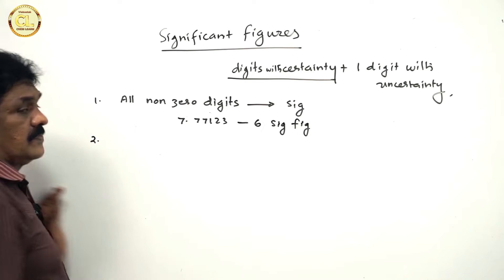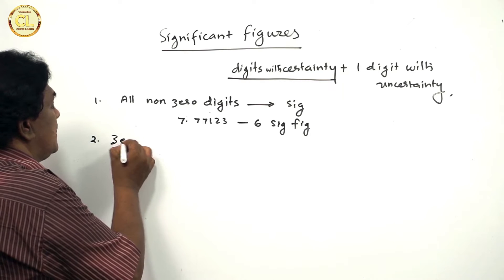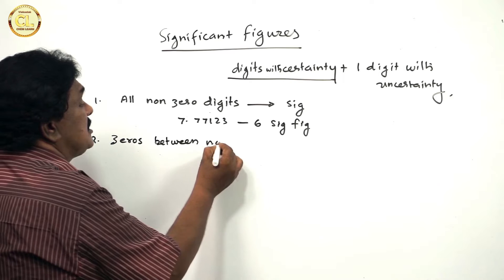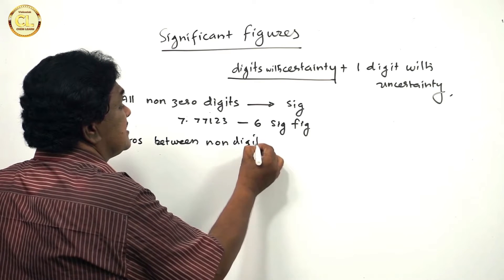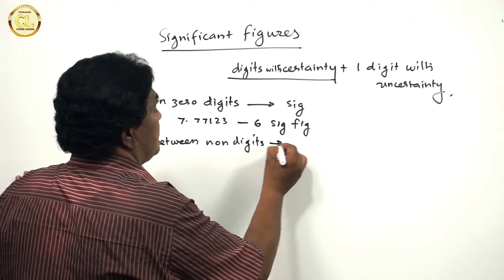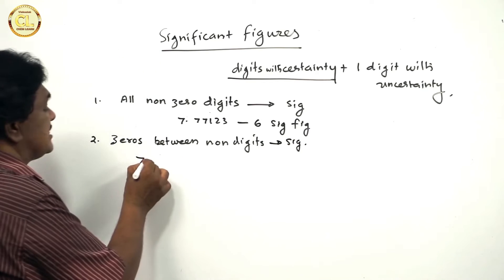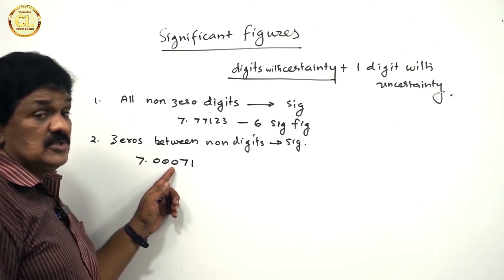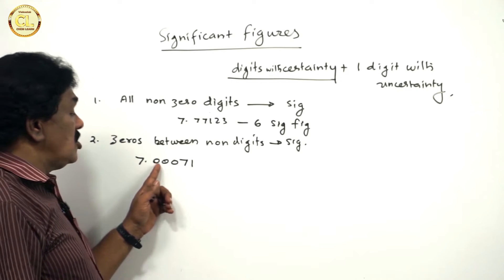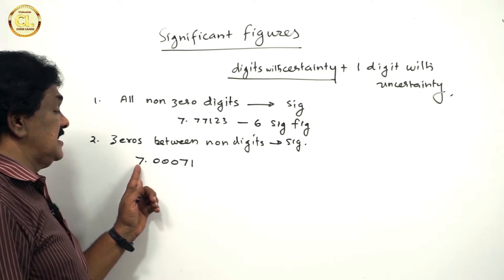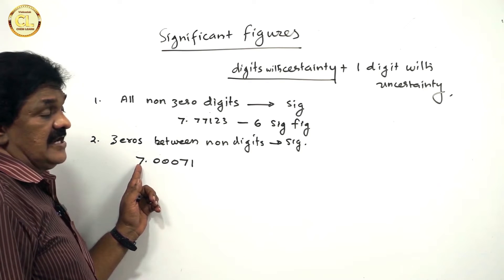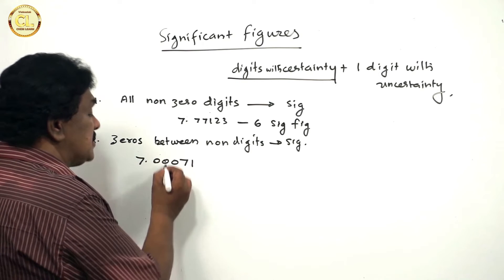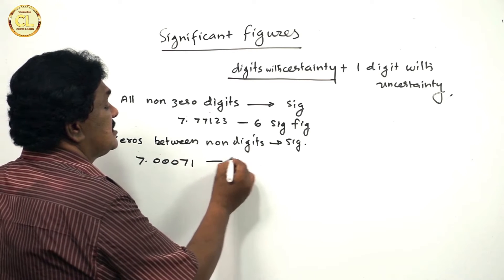Second: zeros coming between non-zero digits are significant. For example, 7.00071. All these three zeros are coming between this 7 and this 7 — the non-zero digits. So all these zeros are significant. There are 6 significant figures.